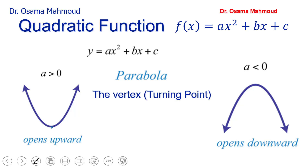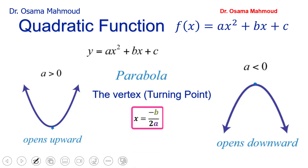This turning point is called the turning point or vertex. Sometimes it will be a maximum, and sometimes it will be a minimum. To find the vertex, you get the x-coordinate from the formula X = −B / 2A.